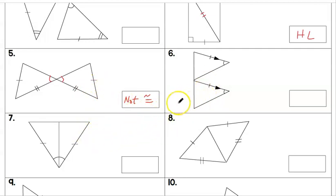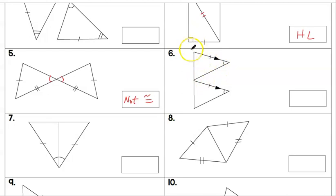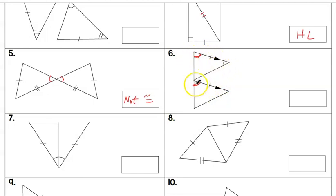For number six, these corresponding angles are congruent and sides are congruent. It's important to notice that these two sides are parallel and we have a transversal cutting through, so these angles here would be congruent. That gives us Angle-Side-Angle established, so for number six we say Angle-Side-Angle.